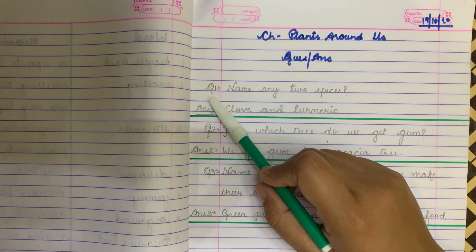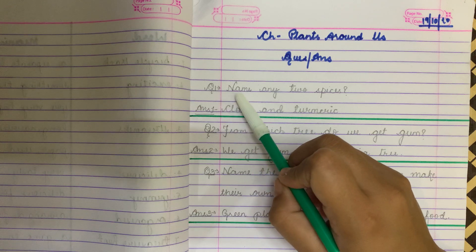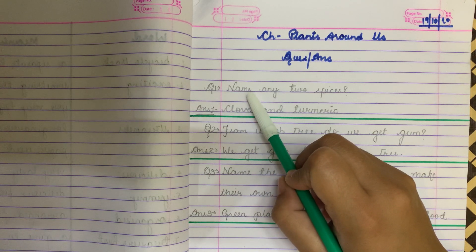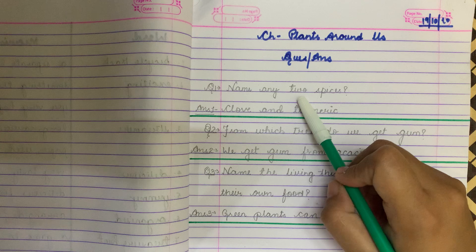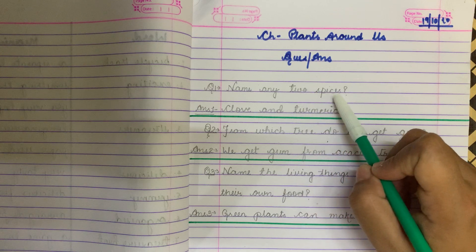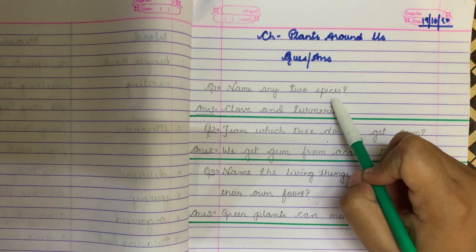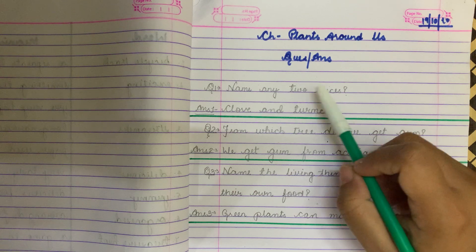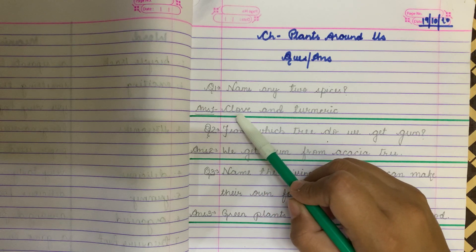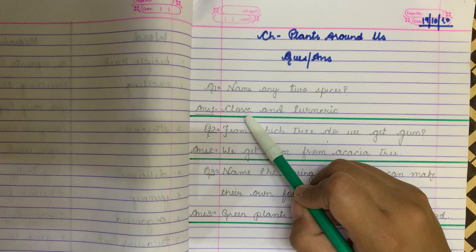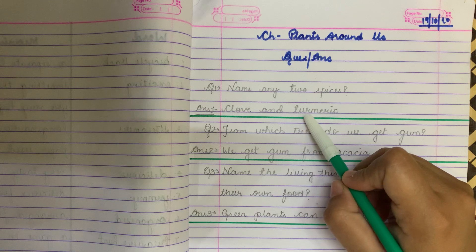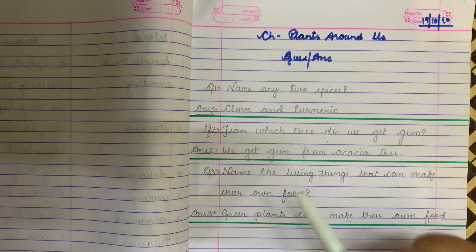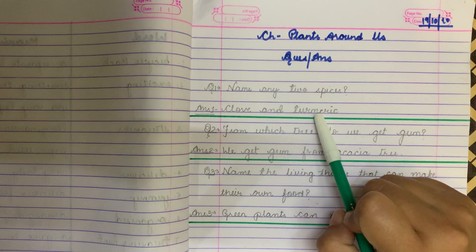Write down question number 1: Name any two spices. The answer is — any two spices: T-U-R-M-E-R-I-C, turmeric. (Also clove.) Very good.